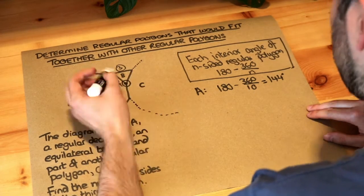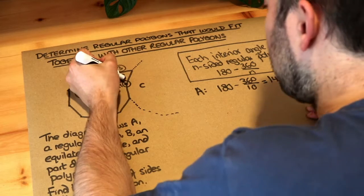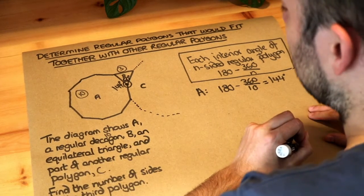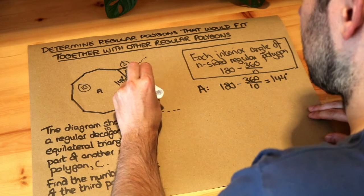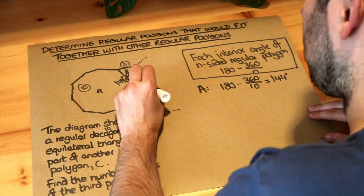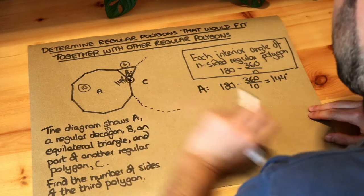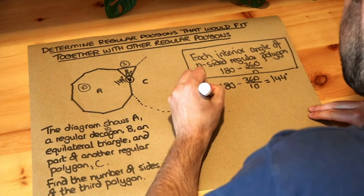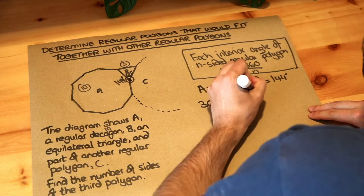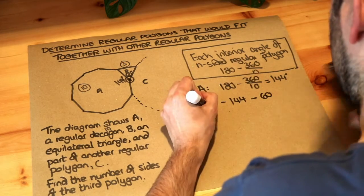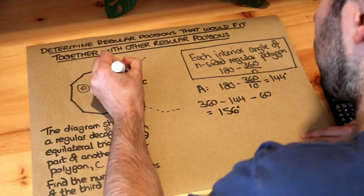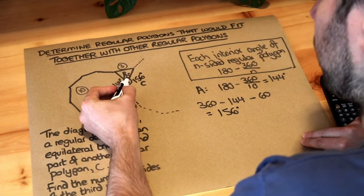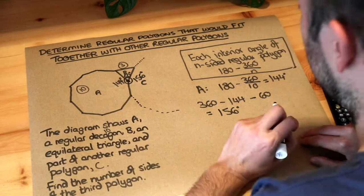Now an equilateral triangle, we could use the same formula, but you should know that the interior angle of an equilateral triangle is just 60 degrees, and then we can just do 360 minus that 60 minus 144 to find the remaining angle around this point. So we just do 360 minus 144 minus 60, I'm going to do that on a calculator, and that gives you 156 degrees. So that remaining angle around this point here is 156 degrees.